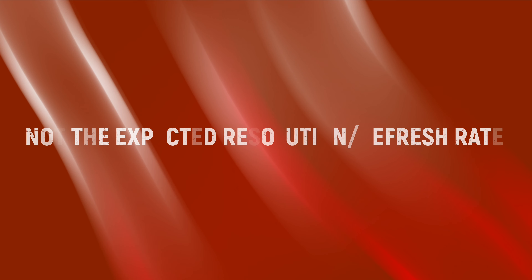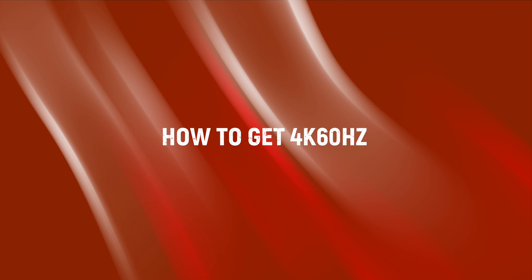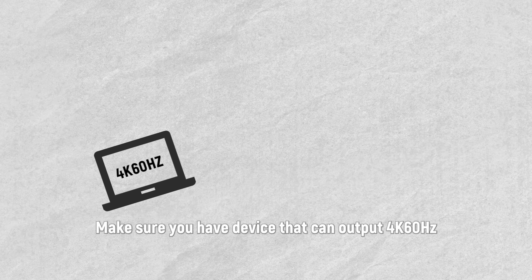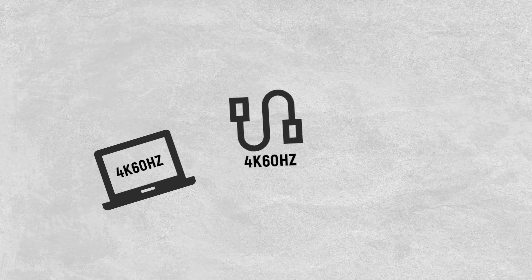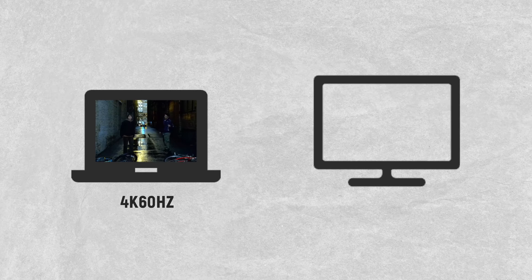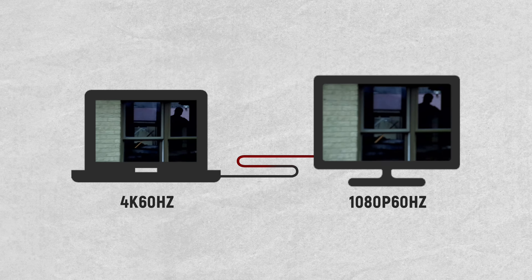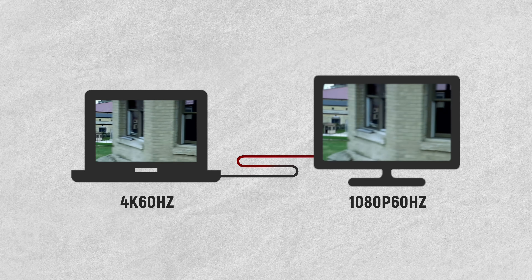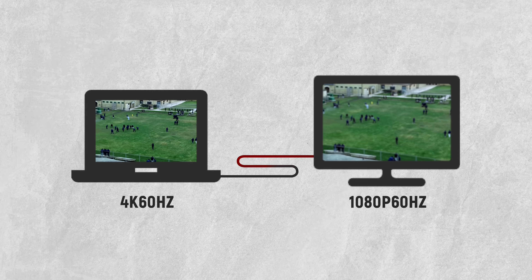Situation 2: Not the expected resolution or refresh rates. Make sure your device can output 4K 60Hz, that the adapter or cable supports 4K 60Hz, and that the external display supports 4K 60Hz. For example, if you use a 4K 60Hz HDMI cable and a 4K-supported laptop, but your monitor only supports 1080p, you will not be able to get 4K viewing.